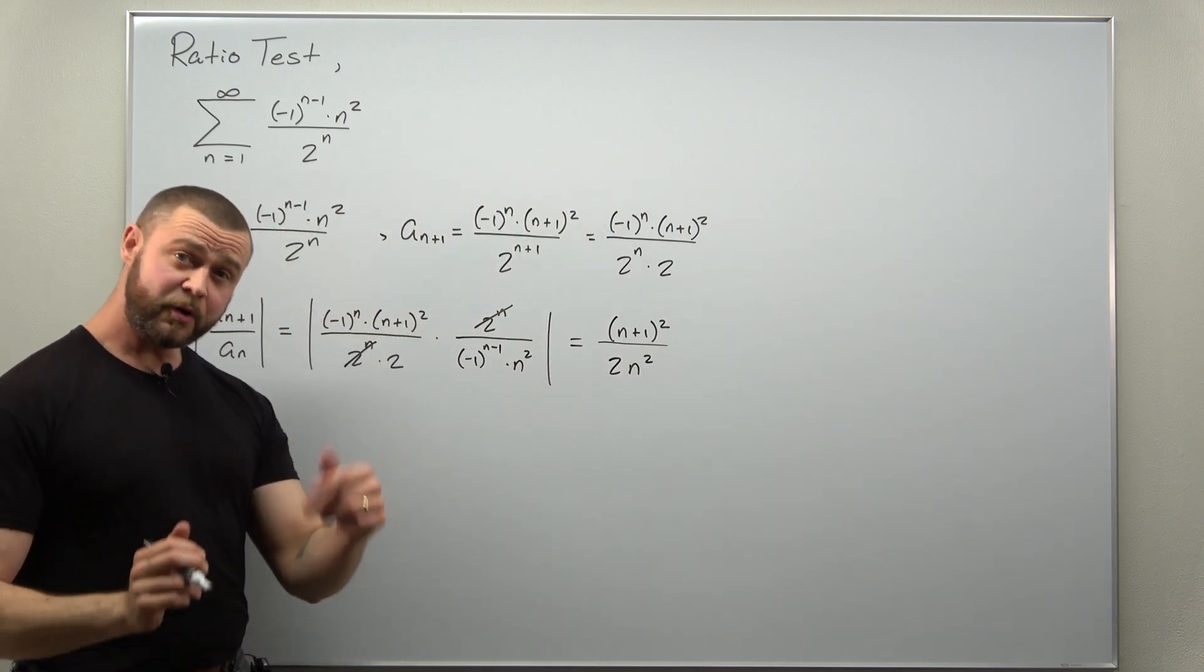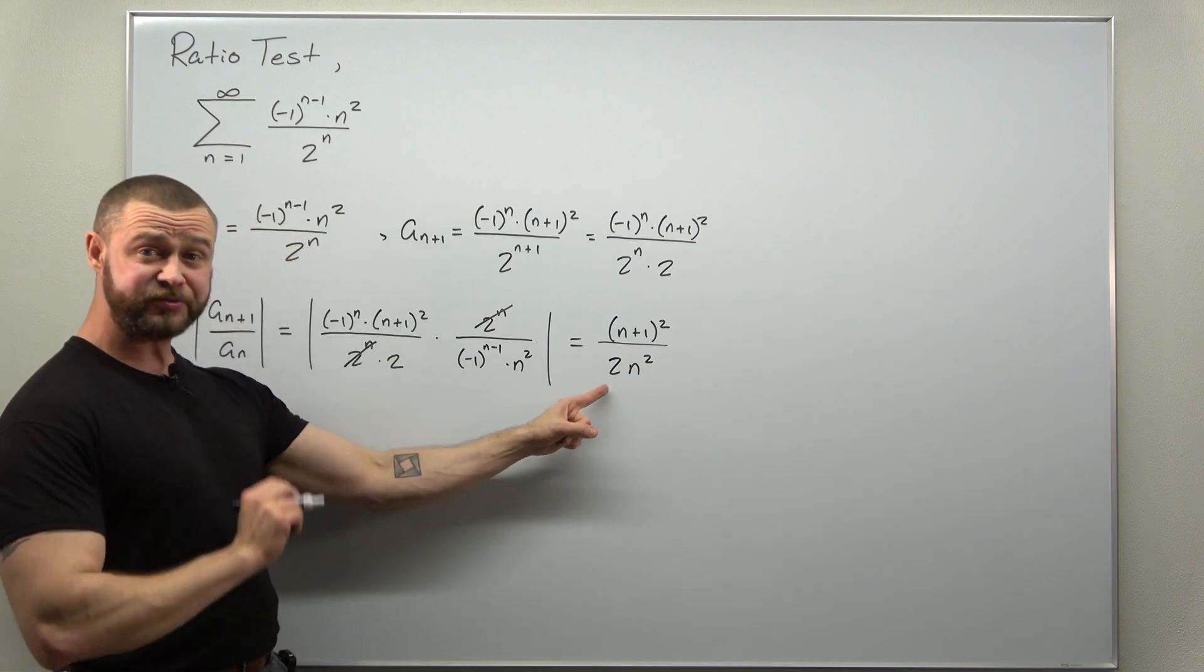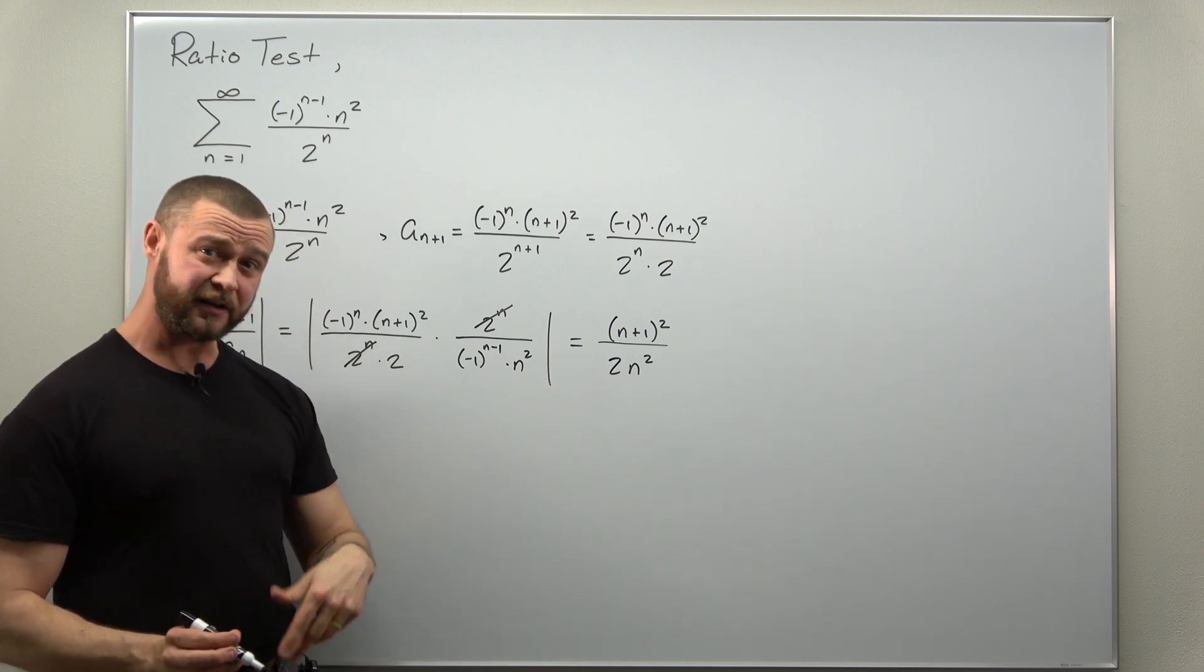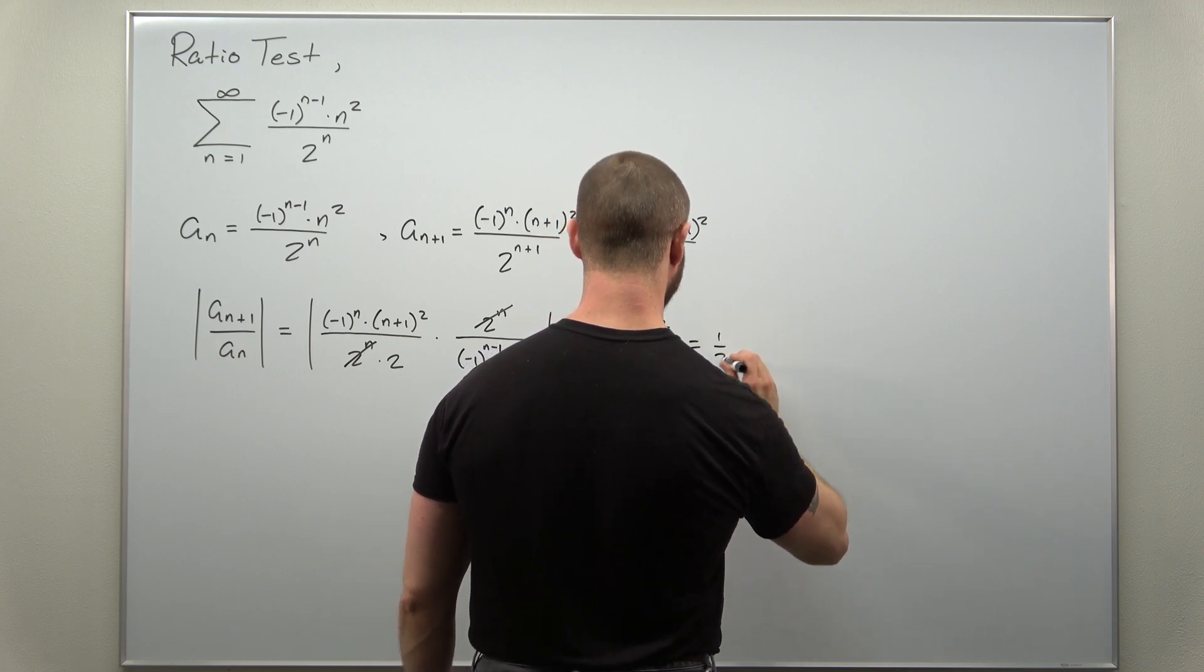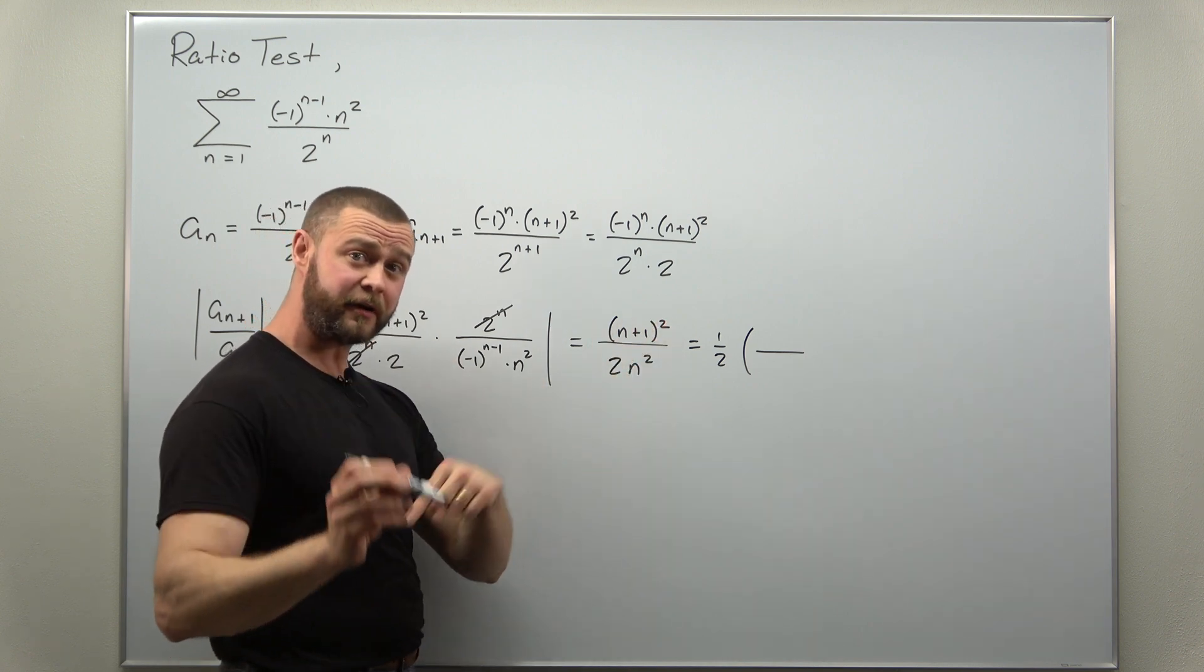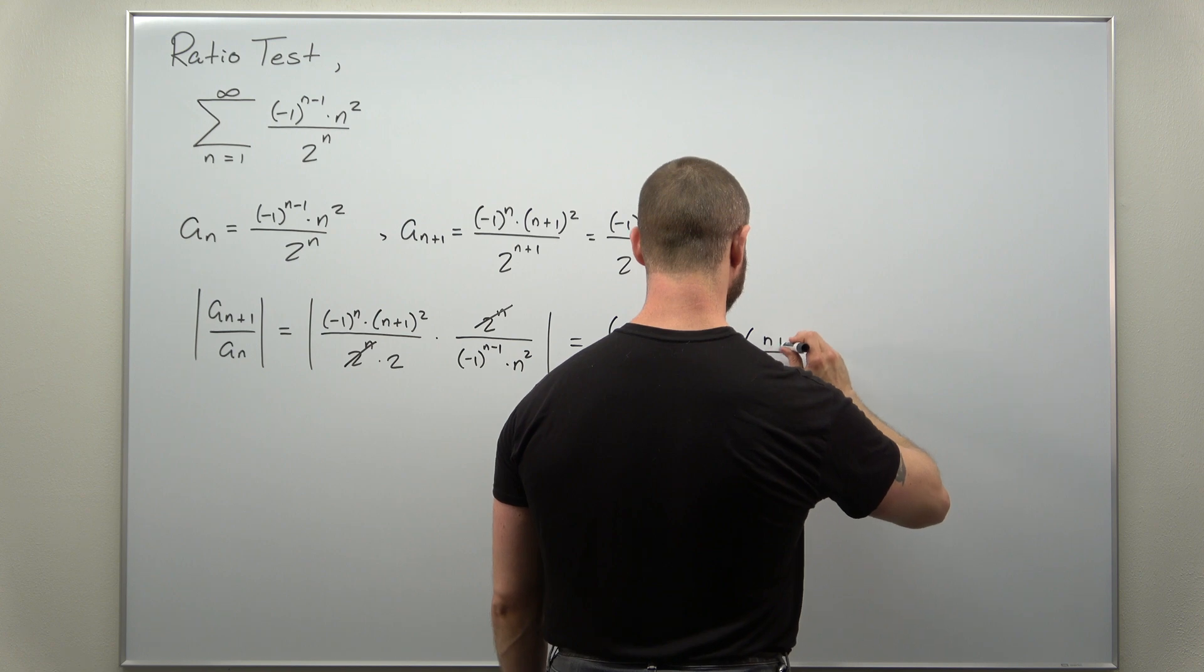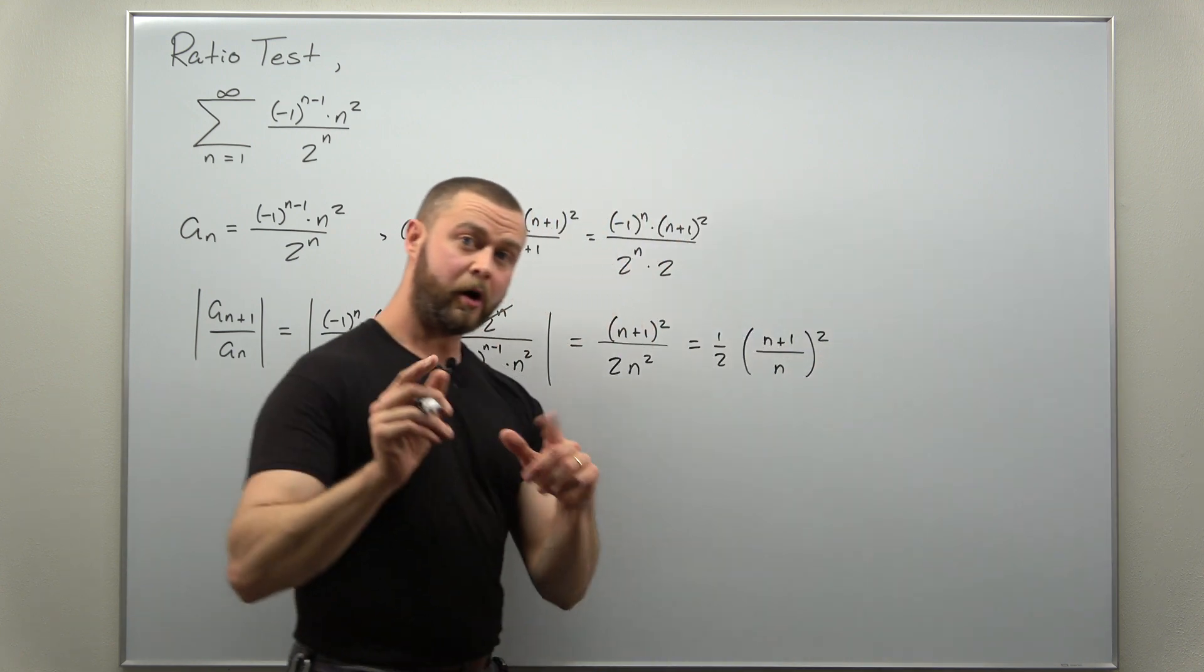All right, now there's a few ways you could proceed. Good tool to always have available is possibly using L'Hopital's rule, but this one you can rewrite it, which might be helpful. You can rewrite this as one half. And then since we have the same power two in the numerator and denominator, I can rewrite this as the fraction n plus one divided by n all squared.